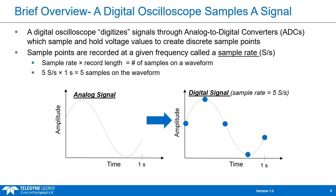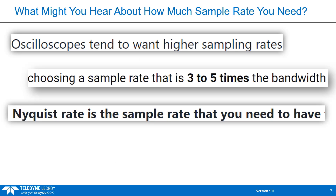If we were to have a higher sample rate under the same record length, we would be able to reconstruct the signal using more samples from the waveform. The higher the sample rate, the more accurately we will be able to reconstruct the waveform. Now when it comes to how much sample rate you need, if you look up answers online you'll find a wide range — from 'the higher the better' to 'sample rate needs to be X times higher than bandwidth.'